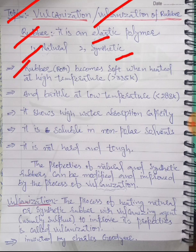Rubber, both natural and synthetic, becomes soft when heated at high temperature greater than 335 Kelvin and brittle at low temperature less than 283 Kelvin. It shows high water absorption capacity and is soluble in non-polar solvents.